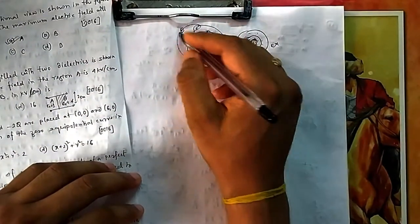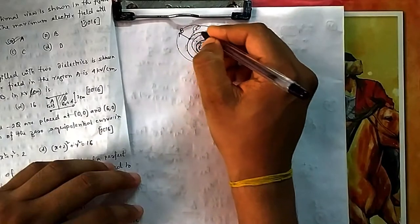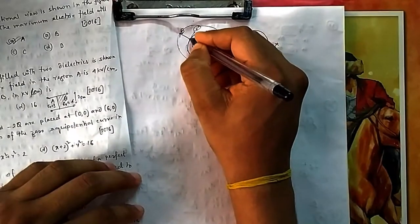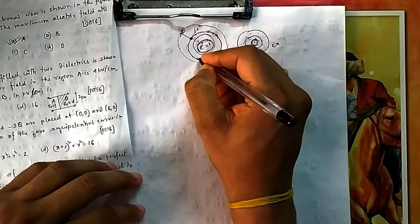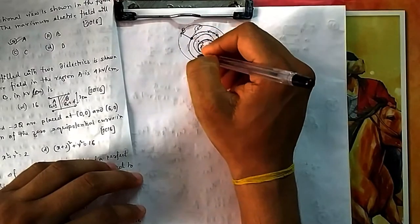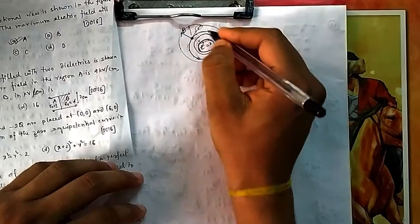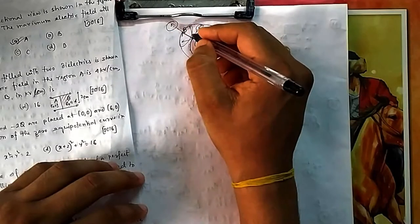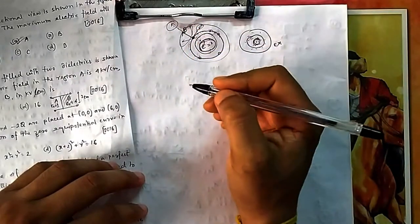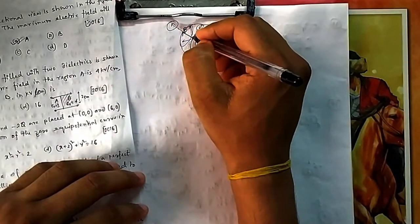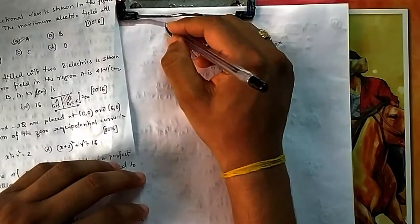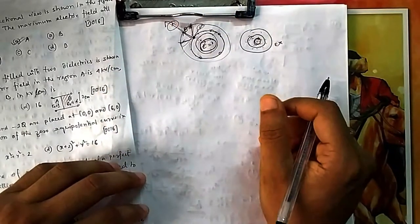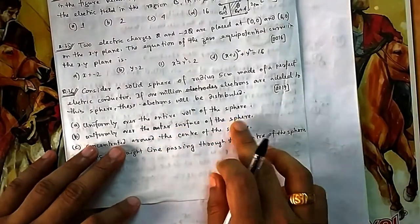The charge must be placed uniformly over the surface. If placed uniformly on the surface, the enclosed charge inside any interior Gaussian surface is zero, so E = 0 inside. Outside, the field comes out symmetrically. Due to symmetry, horizontal components cancel and the net field points radially outward. So the charges distribute uniformly over the outer surface of the sphere — that is option B.